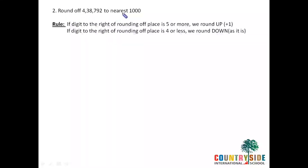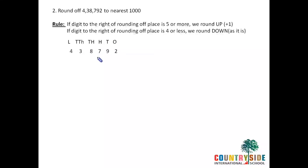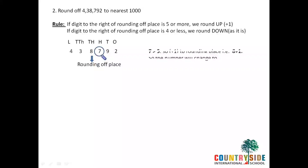Moving on to the next question: rounding off the same number 4,38,792 to the nearest 1,000. Place it in the place value system — 1s, tens, hundreds, thousands. 8 is my rounding off place because it is in the thousands position. The digit to the right of the rounding off place is 7. Is 7 greater than 5? Yes, it is greater. So as 7 is greater than 5, we will add 1 to the rounding off place. Remember students: add 1 to 8, not to 7. This is a common mistake which all students make.